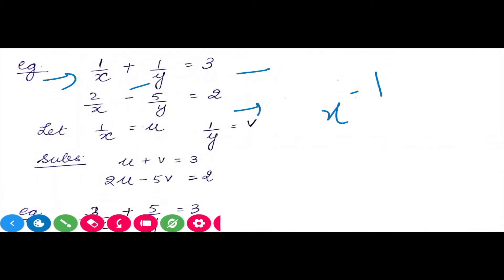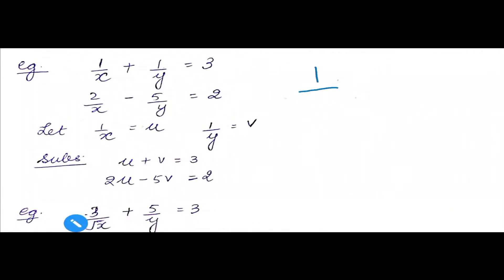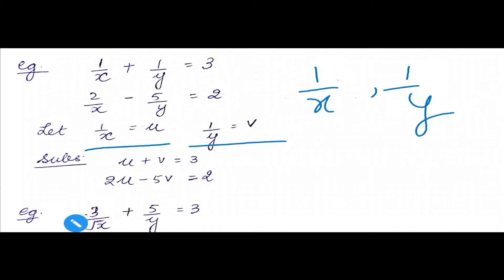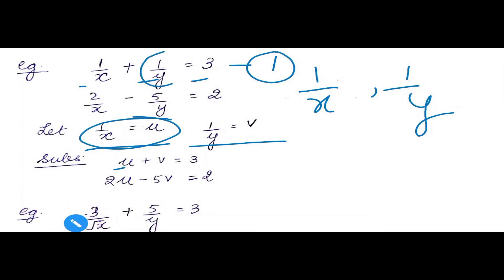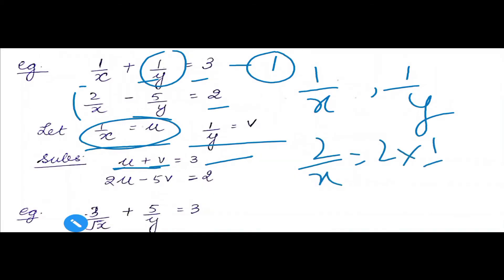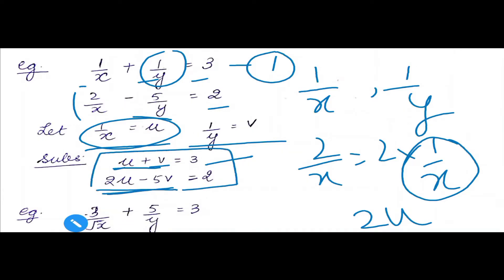The variables are 1 by x and 1 by y. So let 1 by x equal u, and 1 by y equal v. The first equation becomes u plus v equals 3. For the second equation, 2 by x is 2 times 1 by x, which is 2u; and 5 by y is 5 times 1 by y, which is 5v. So the second equation becomes 2u minus 5v equals 2. We will solve for u and v, then find x and y.